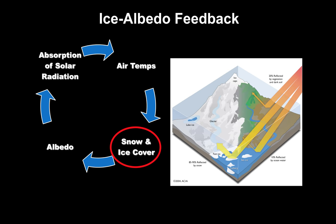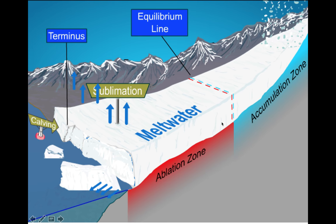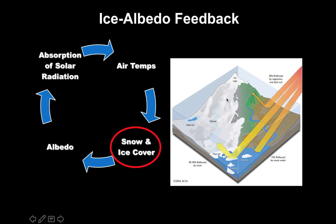Something called ice albedo feedback is very important. Ice is very white, so it is very reflective — it has high albedo, which is another term for reflectivity. Ocean and vegetation, on the other hand, absorb more radiation. As air temperatures increase, we reduce snow and ice cover, which means we reduce the white portion of the landscape and reduce the albedo. We expose more land and ocean, meaning more of the dark surface absorbs solar radiation, which raises air temperature further — creating a positive feedback cycle that keeps getting worse as temperatures increase.